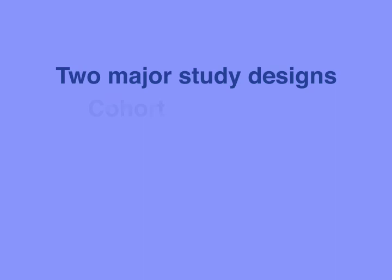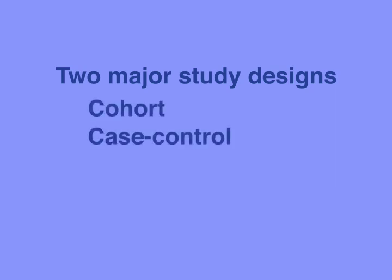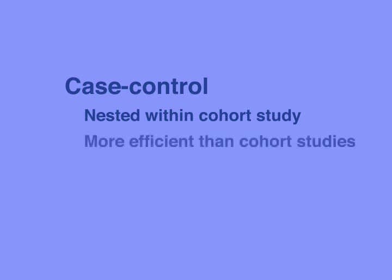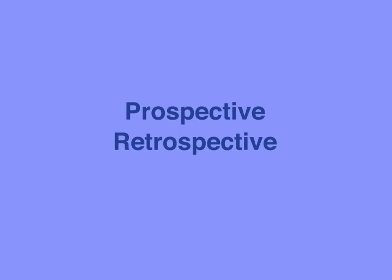In this podcast, we've discussed a number of important concepts. We've discussed the two major study designs — the cohort study and the case-control study — and observed that a controlled clinical trial is simply a form of cohort study. We've discussed how case-control studies can be thought of as being nested within an underlying cohort, and that they are often more efficient than cohort studies. Finally, we discussed why the terms prospective and retrospective are somewhat arbitrary, potentially confusing, and better avoided. This concludes this podcast.